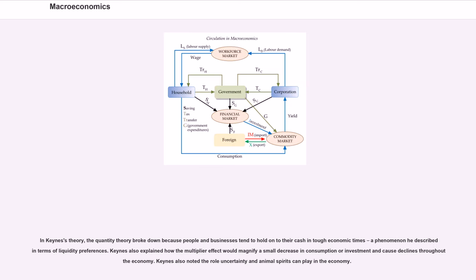In Keynes's theory, the quantity theory broke down because people and businesses tend to hold on to their cash in tough economic times, a phenomenon he described in terms of liquidity preferences. Keynes also explained how the multiplier effect would magnify a small decrease in consumption or investment and cause declines throughout the economy. Keynes also noted the role uncertainty and animal spirits can play in the economy.